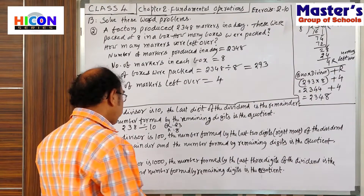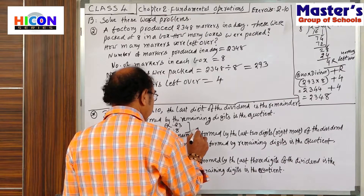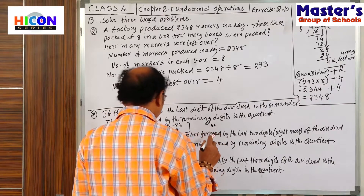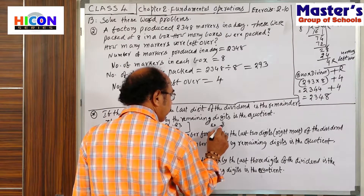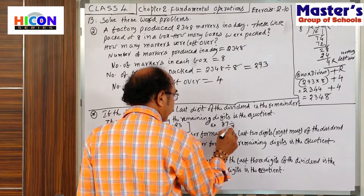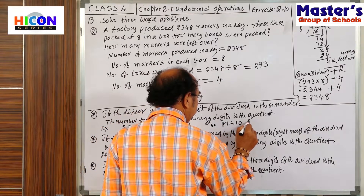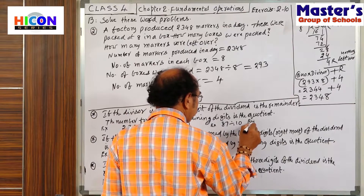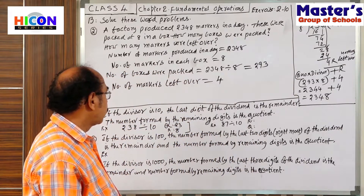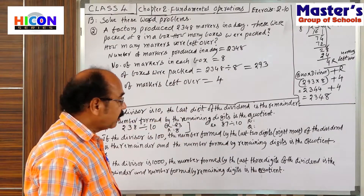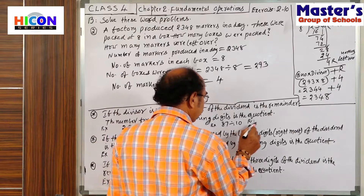Another example — see, another example. 87 divided by 10. What is the remainder and what is the quotient? The last digit of the dividend — what is the last digit of the dividend? 7. 7 is the remainder.